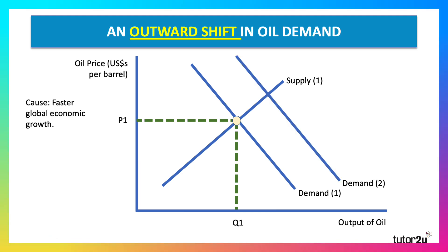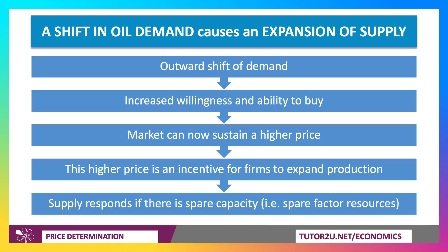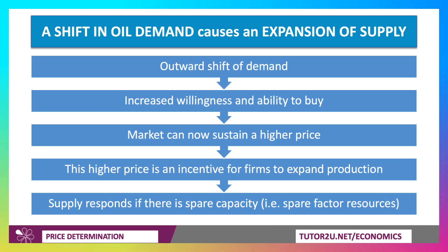Prices and equilibrium points change when there's a shift in one or more of the components of demand. So let's take the market for oil: let's say there's an increase in the rate of global economic growth, increasing the derived demand for oil, shifting demand out from D1 to D2. In theory, this causes, over time, the market price of oil to move up to P2 and supply to expand to Q2. When there's an outward shift of demand, there's an increased willingness and ability to buy, the market can now sustain a higher price, and that higher price is an incentive for firms to expand production. That's the working of the price mechanism — supply responds if there is spare capacity and spare factor resources. That expansion of supply does depend on the elasticity of supply.